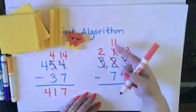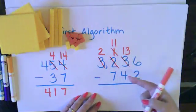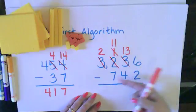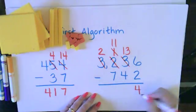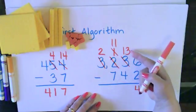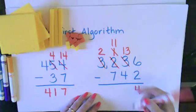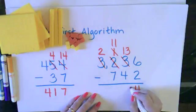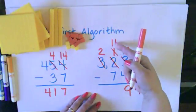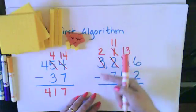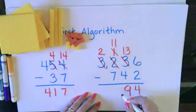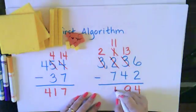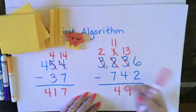Now I can do my subtraction. I have 6 1s minus 2 1s, that leaves me 4 1s. I have 13 10s take away 4 10s, that leaves me 9 10s. I have 11 100s minus 7 100s, and that leaves me 4 100s.